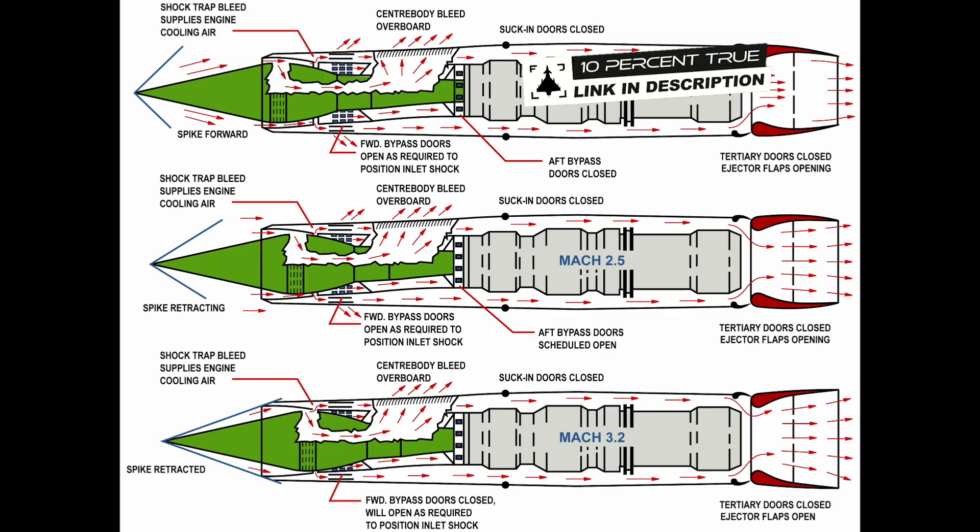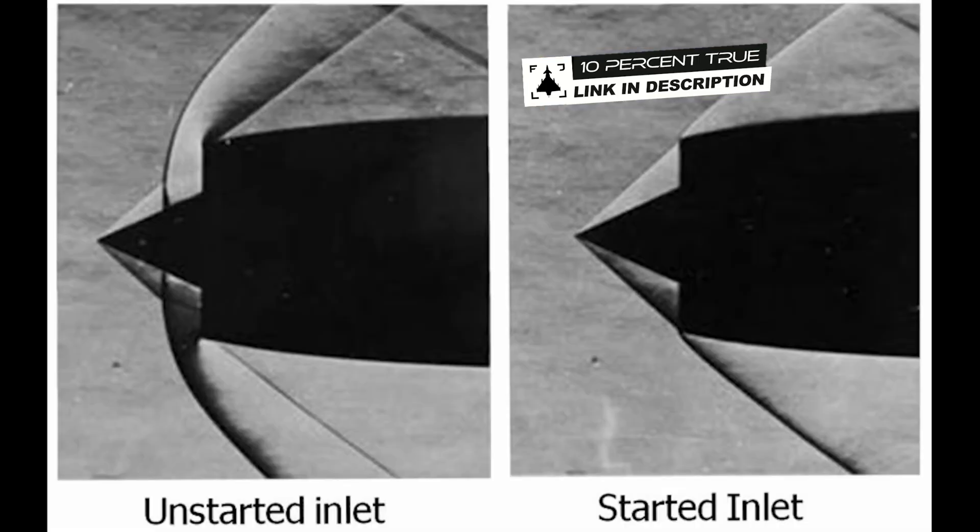An unstart is the violent expulsion of the normal shock from inside the inlet to outside the airplane — it expels it forwards. It goes wham, and it happens immediately; sometimes there's no warning. What would cause it? Angle of sideslip, for one thing. The spike is supposed to compensate for sideslip and angle of attack by biasing slightly forward, but at Mach 3.2, that's not enough. Don't do a full rudder sideslip — there's no reason to do that anyway; it was just a test.